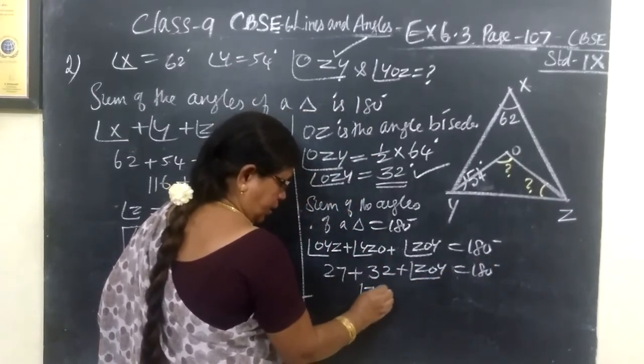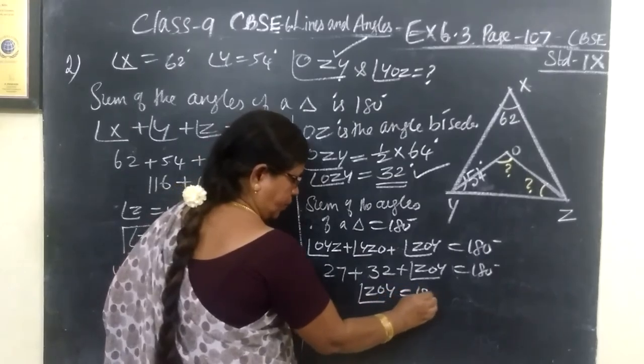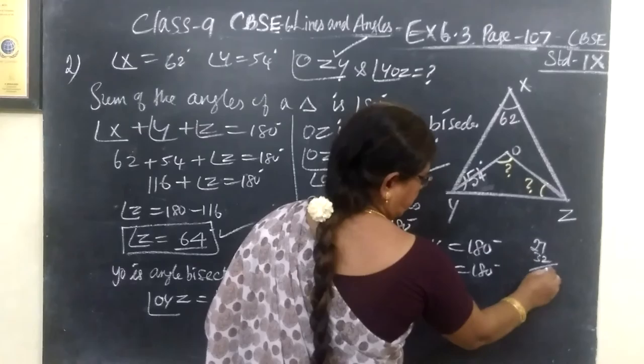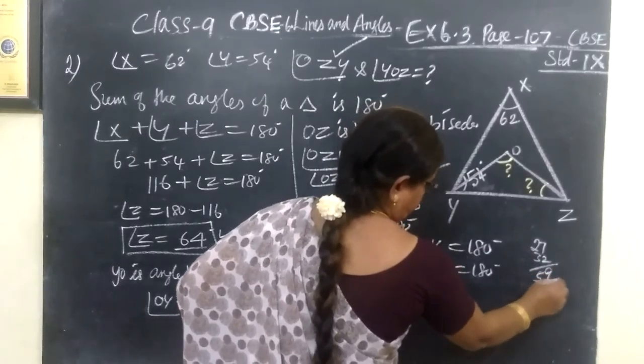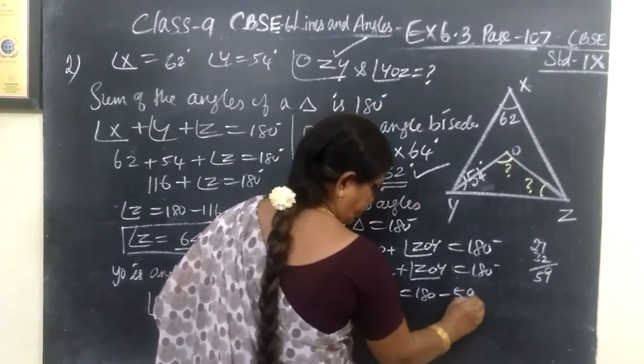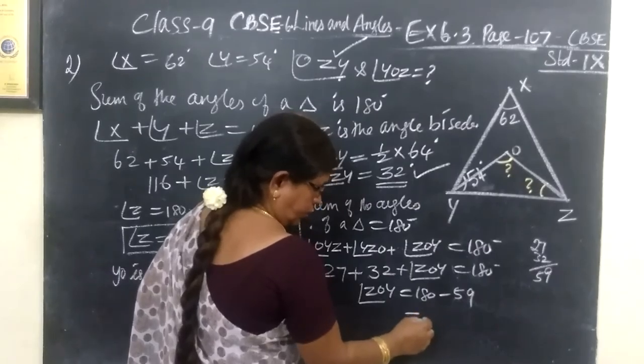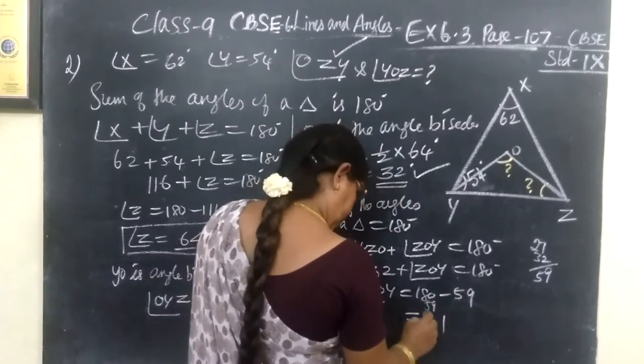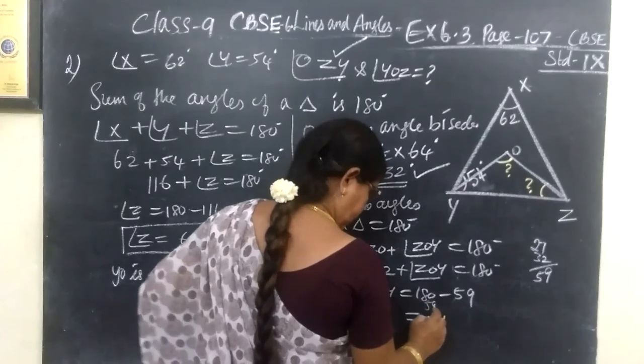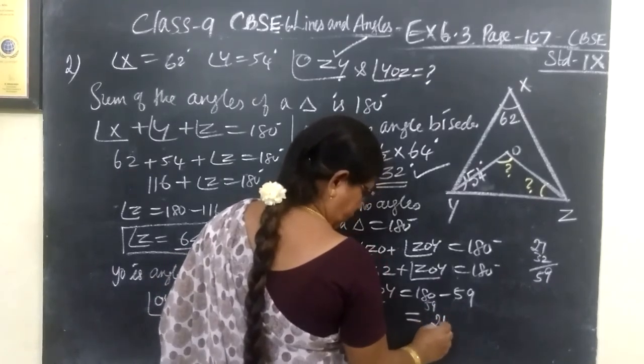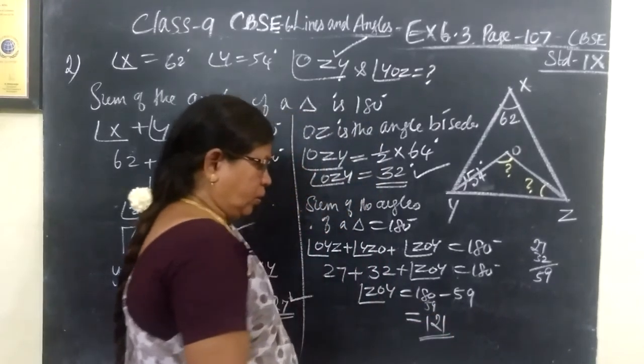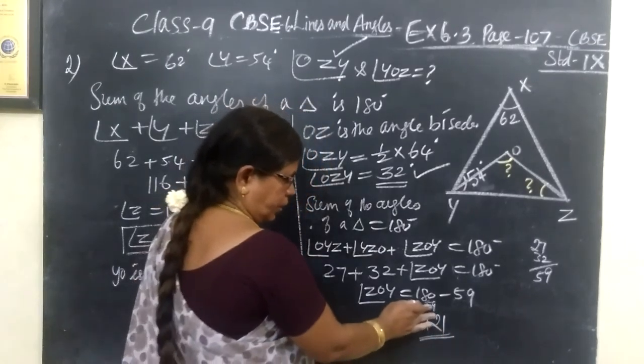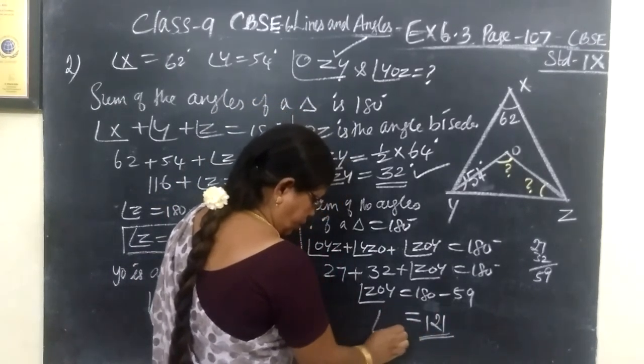Therefore, angle ZOY equal to 180. If you add, you are getting 27, 32, which is 59. So, minus 59. So, this is equal to 121. You add and verify. So, 121 degrees. This only we want to find.